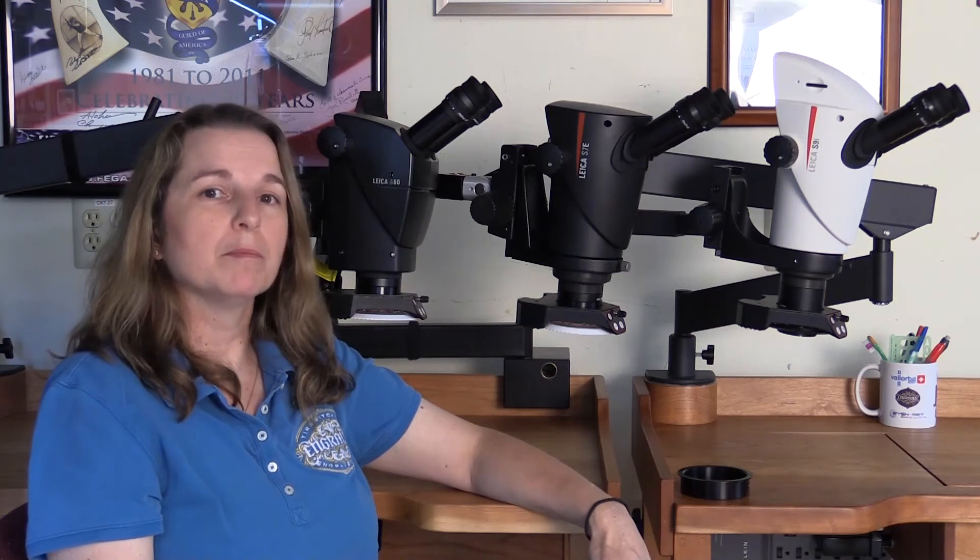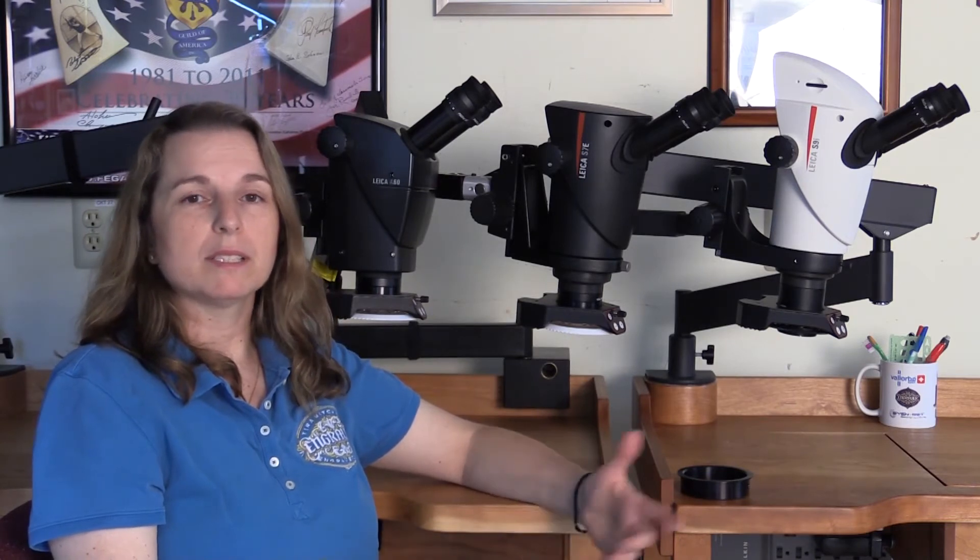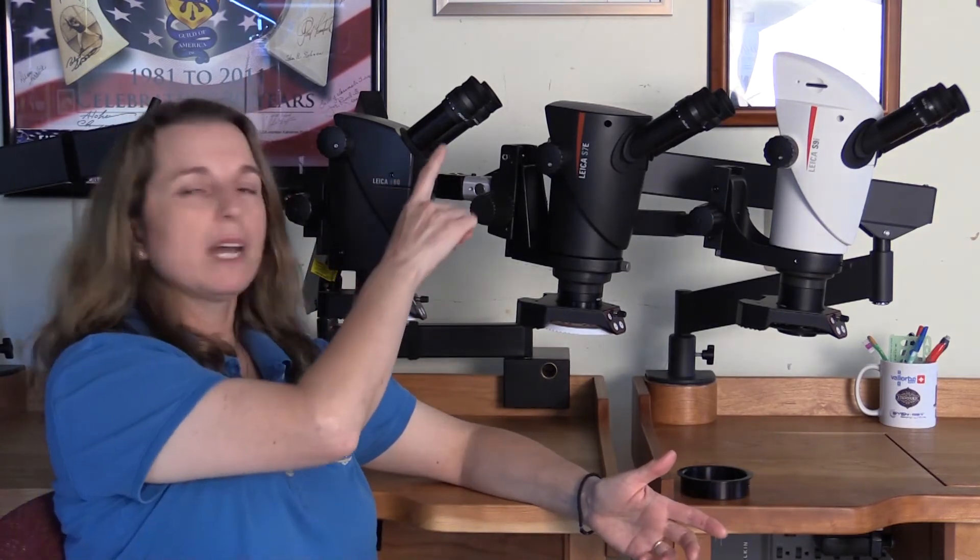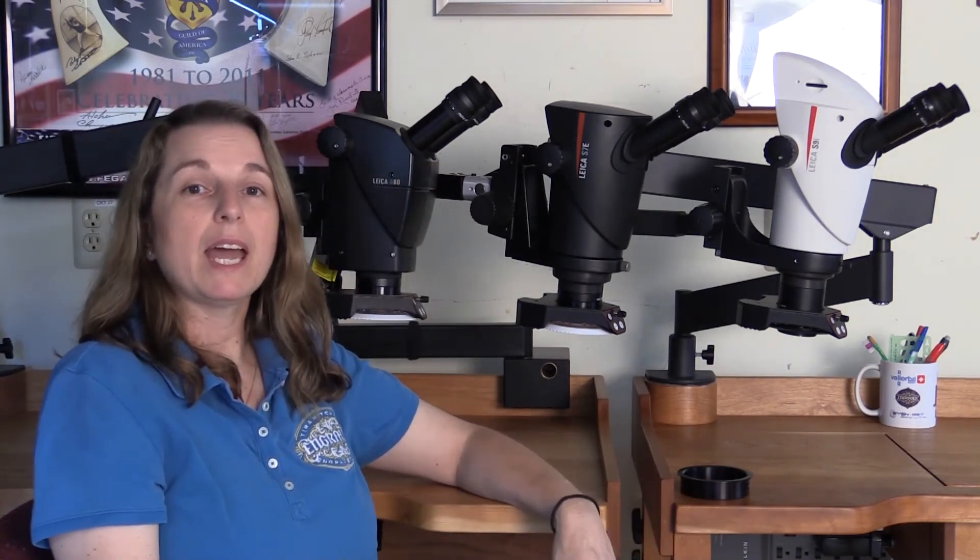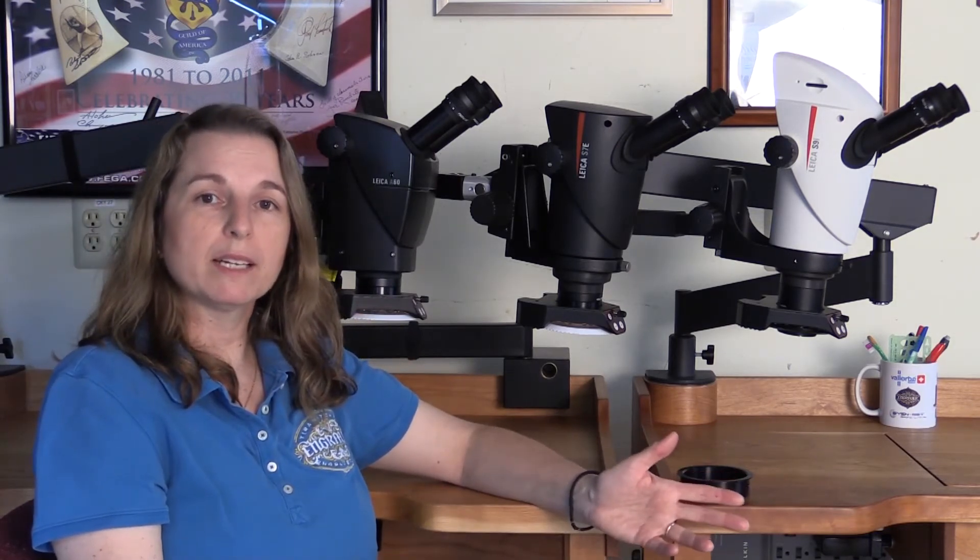As far as ordering them, the A60 comes as a package. It includes the clamp mount, the stand, the head with the eyepieces attached, and the LED light. All of that comes priced from Leica as a package.